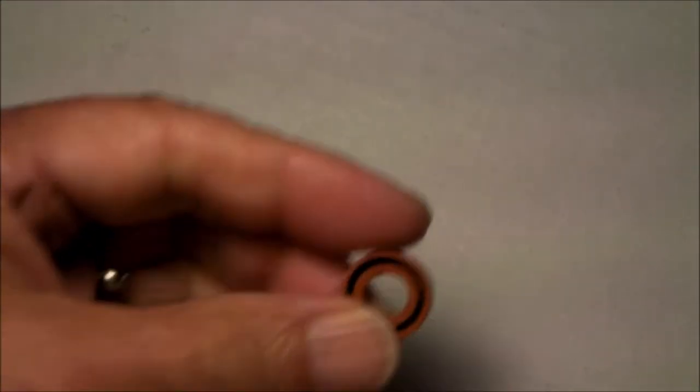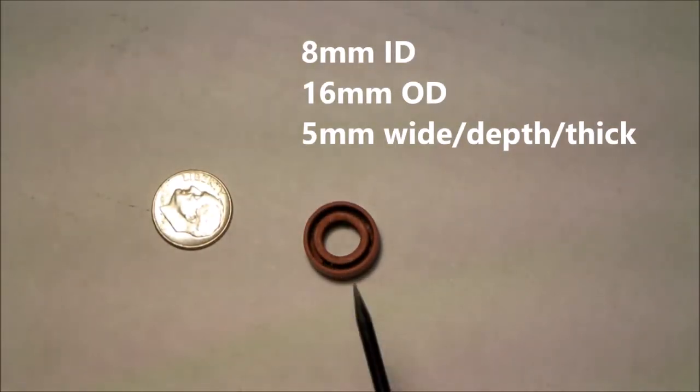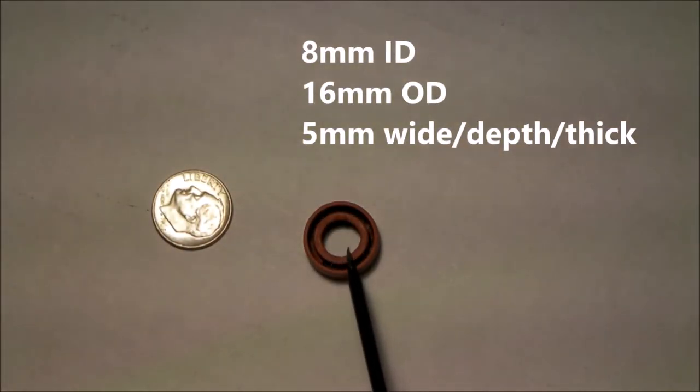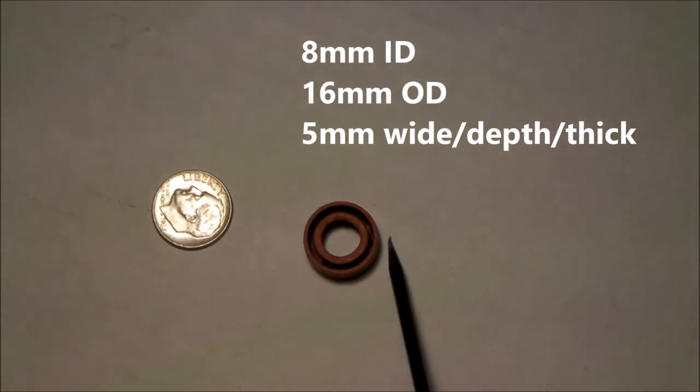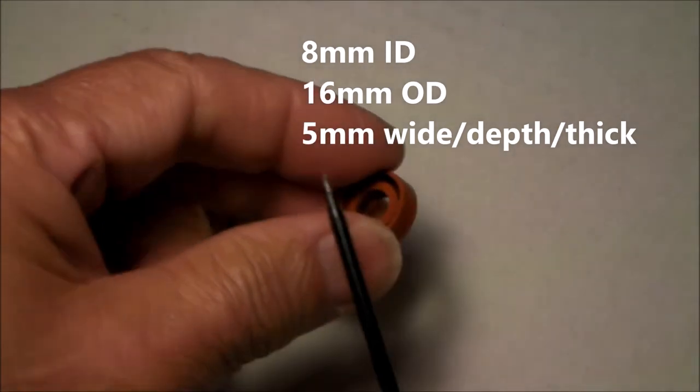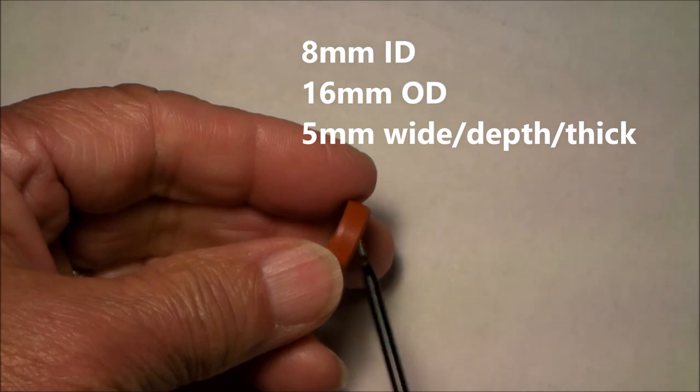If you're going to replace the seal, you're going to want to know the dimensions. The inner dimensions are 8mm on the inside, 16mm on the outside, and it's about 5mm thick.